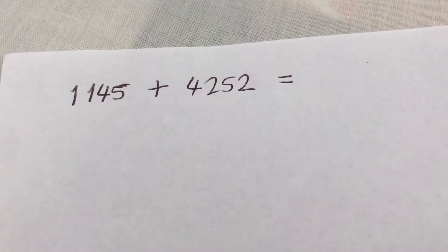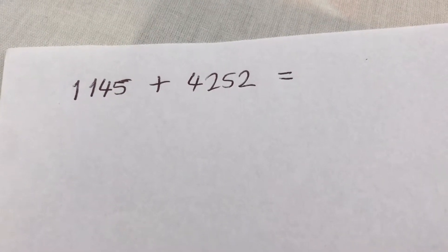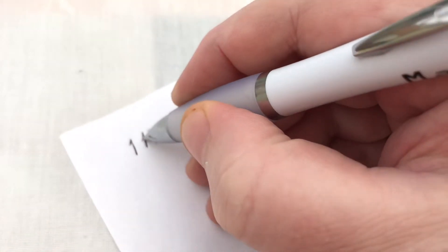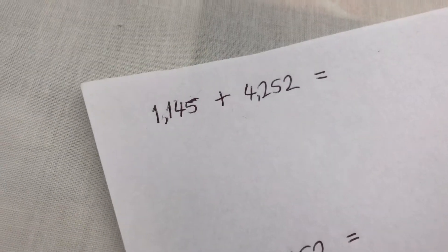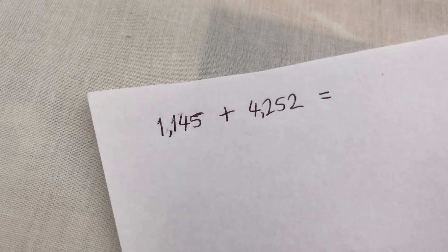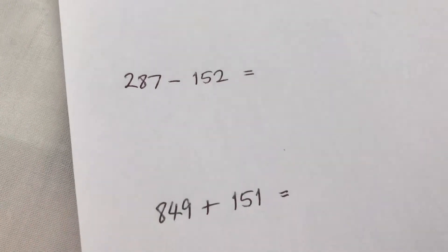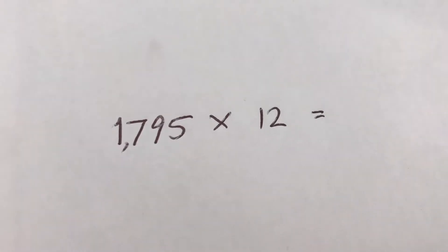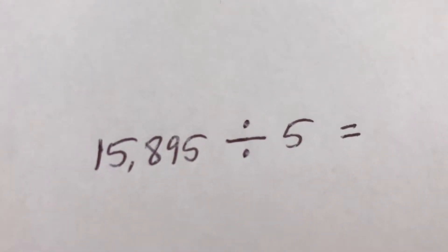Here we have some sums: 1,145 plus 4,252. We can actually put a comma to separate the thousands as we would normally do it, just lets us see the numbers a little bit easier. 287 minus 152, 849 minus 151, 1,795 multiplied by 12, 15,895 divided by 5.